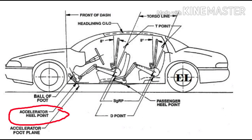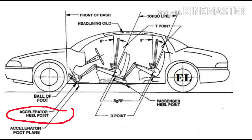The heel point: with the shoe on an undepressed accelerator, the foot angle is 87 degrees minimum. You can see in the image on the screen the occupant sitting and the accelerator heel point position highlighted, with a foot angle of 87 degrees. Altering the heel point affects comfort and safe operation of foot controls.